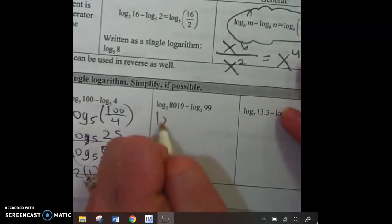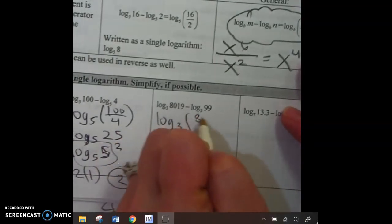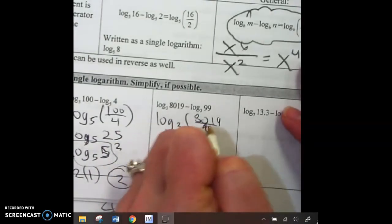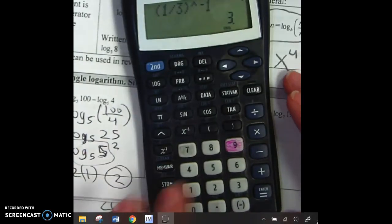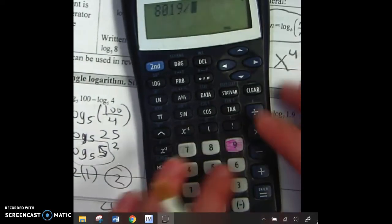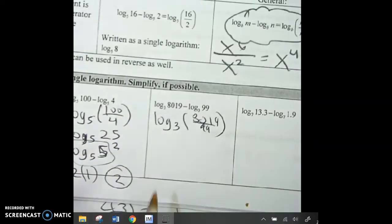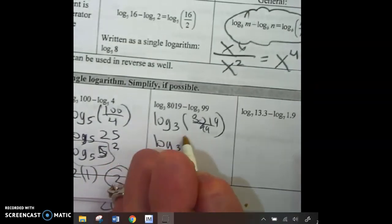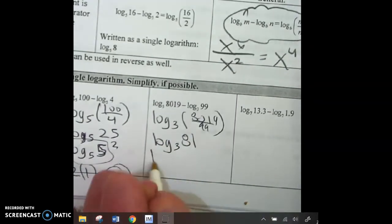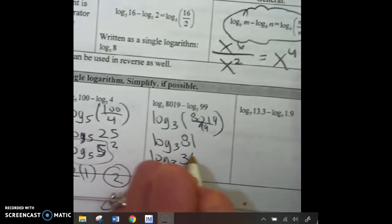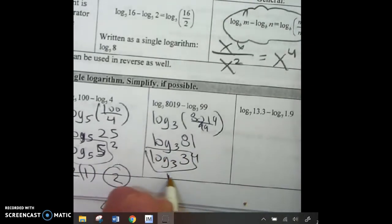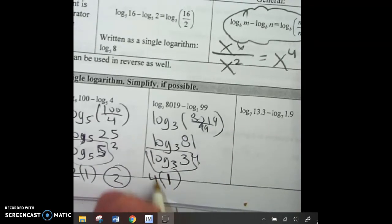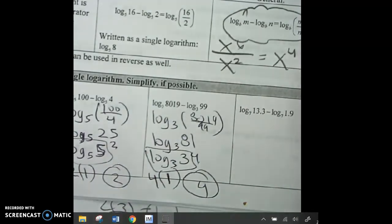Next one. Log 3, 8, 0, 1, 9. Who cares that the numbers are big? I'm going to use a calculator. It's okay. 8, 0, 1, 9 divided by 99. 81. Okay. Log 3, 81. Doesn't matter. This is 3. 3 to the 4th. 1. Little turns big. Done.